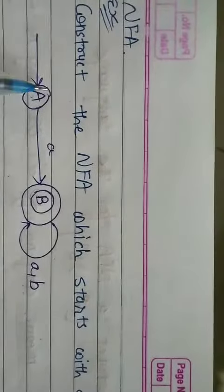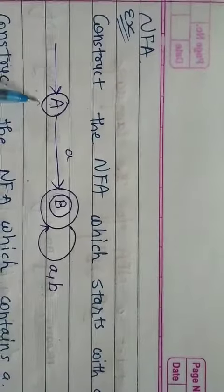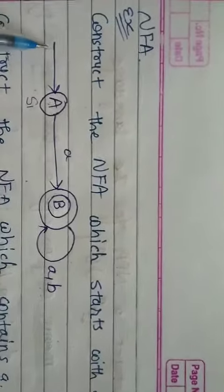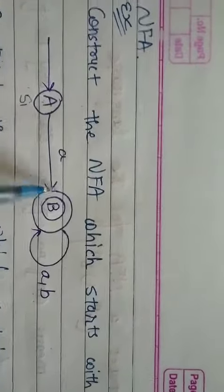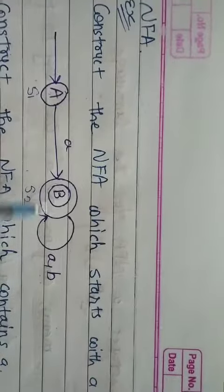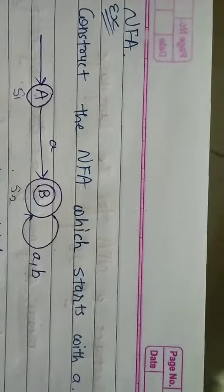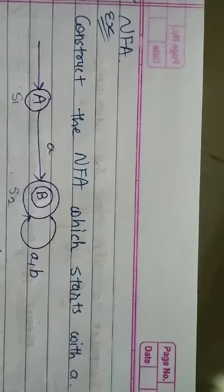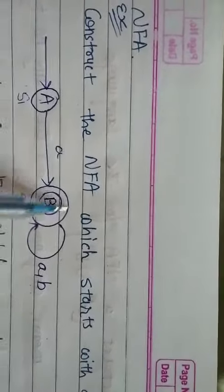So, we have a first state called A. Now, we have S1 also. S1 is our state A, A goes to B, so S2 goes to A. This is the final state.